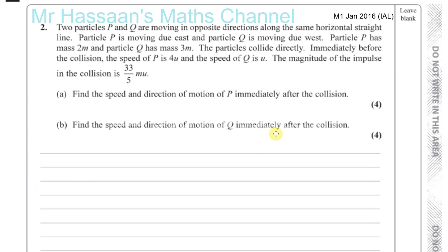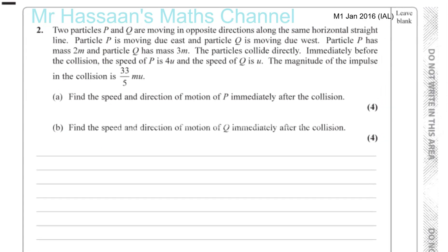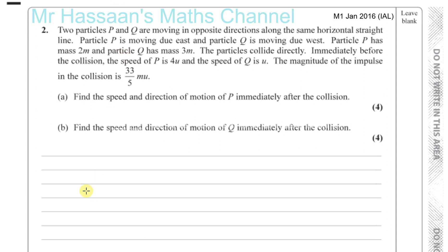Two particles, P and Q, are moving in opposite directions along the same horizontal straight line. So you have a straight line, you have P and Q.